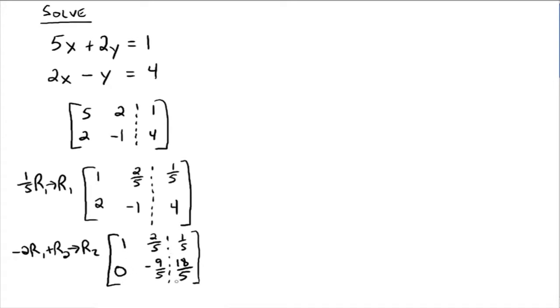All right, so now you go to the second column. Where do you want your 1? Well, you want your 1 right here in this spot where the negative 9 fifths is. So how do you make that negative 9 fifths into a positive 1? Well, you've got to multiply by its reciprocal, negative 5 ninths times row 2 gives you a new row 2.